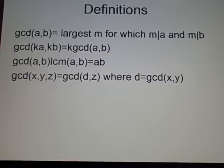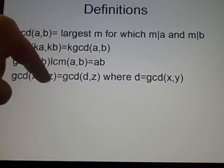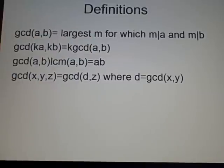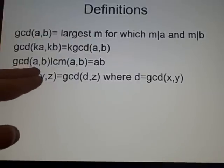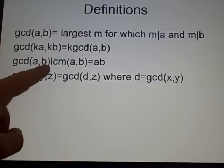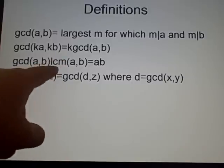Right now, definitions as always. The greatest common divisor of a and b is the largest value, say m, for which m divides a and m divides b. Some other stuff here: we've got the greatest common divisor of ka and kb is k times the greatest common divisor of a and b. The greatest common divisor of ab times the lowest common multiple, which is the lowest value for which a and b are both factors, times them together and you get ab.